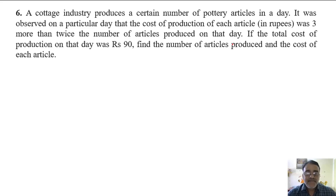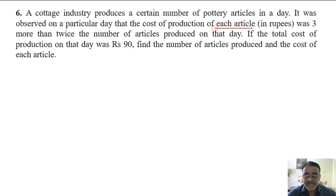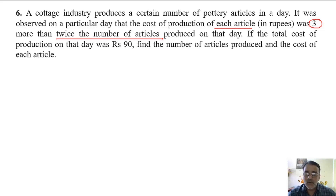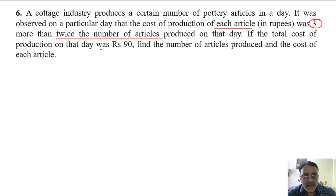A cottage industry produces a certain number of pottery articles in a day. It was observed on a particular day that the cost of production of each article was 3 more than twice the number of articles. If the total cost of production on that day was Rs. 90, find the number of articles produced and the cost of each article.